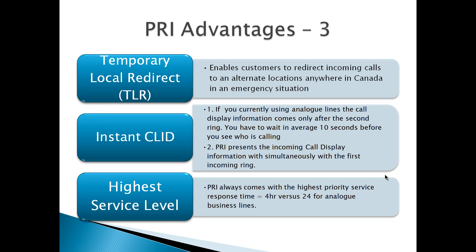Temporary local redirect enables customers to redirect incoming calls to alternate locations anywhere in Canada in emergency situations. This is an optional feature that is charged extra, but it can help save your business in disaster recovery. Because of this digital service, the carrier can automatically redirect all incoming calls to your backup locations, which is ideal for any real-time applications such as ordering pizza or any kind of time-sensitive materials. Calls can be automatically redirected upon detection of a PRI failure to an alternate location.